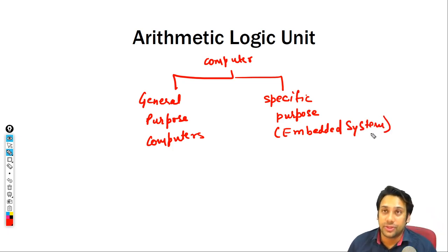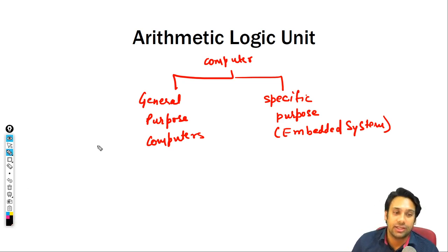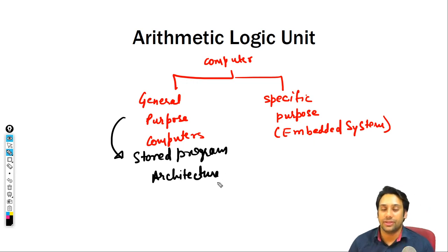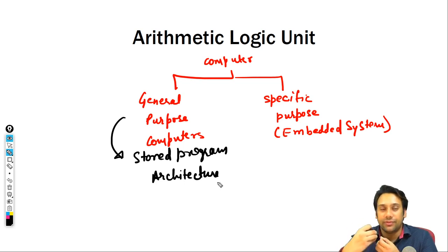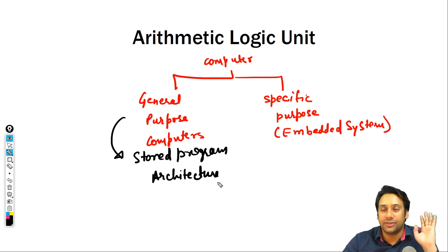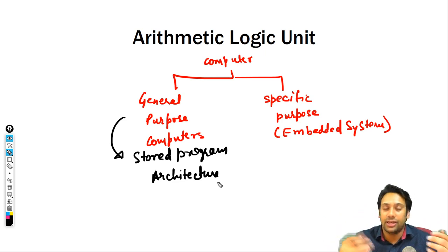General purpose computers can be used to do any task. Basically, general purpose computers follow stored program architecture. This means you have one computer and you can load different programs on it, and the computer will perform different tasks according to whatever program you are inputting. The program is stored in memory and that program decides the functionality of the computer. We call it general purpose because one computer can do many different tasks.